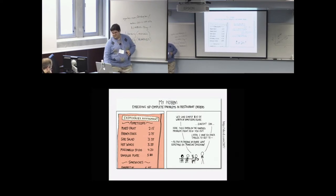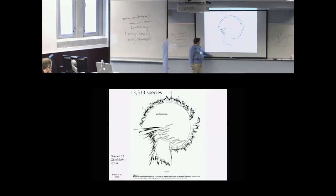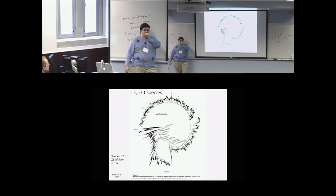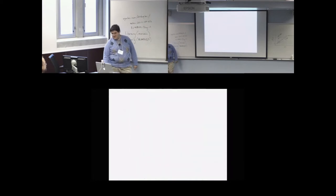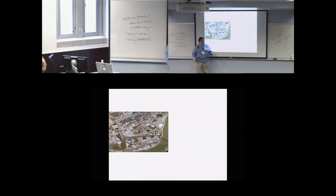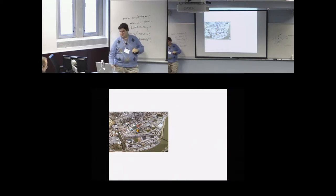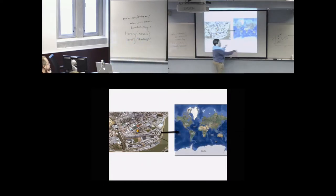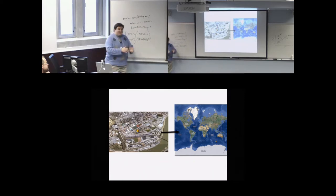Here's a sample tree — 13,000 species — that came out five years ago. It took 32 gigabytes of RAM, which at the time wasn't common. If that search space is the size of this campus, adding just two species makes it the entire planet. The ratio of the campus area to the planet area is the ratio of the search space for a 13,533-taxon tree versus a 13,535-taxon tree. This is a very big, scary problem.